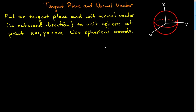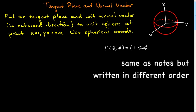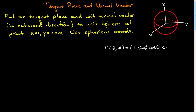Let's go ahead and write the parametrization of the surface in spherical coordinates. You could use u and v, which are our generic two parameters for parametrizing surfaces, but I think it's better to use the natural variables, which are the angles in spherical coordinates. With radius equal to 1, the parametrization is: sine φ cosine θ, sine φ sine θ, cosine φ. That's the parametrization of the sphere.